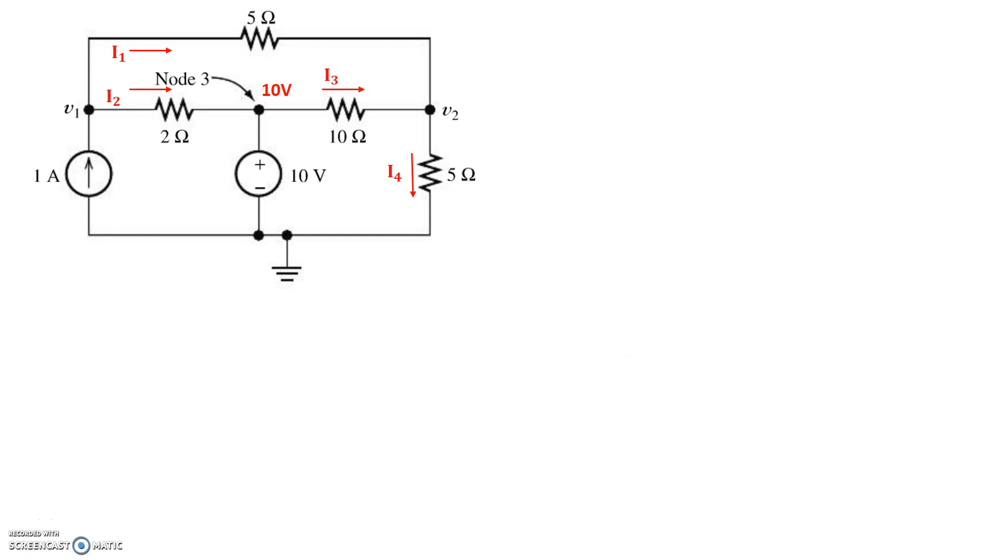So now that we have the arbitrary directions of the current picked, let's go ahead and apply Kirchhoff's current law. Kirchhoff's current law at node 1 and node 2 right here. So Kirchhoff's current law at node 1 basically leads us to the total current going into that node is 1 amp. And the total coming out of that node is I1 and I2, so we get I1 plus I2 equals 1.